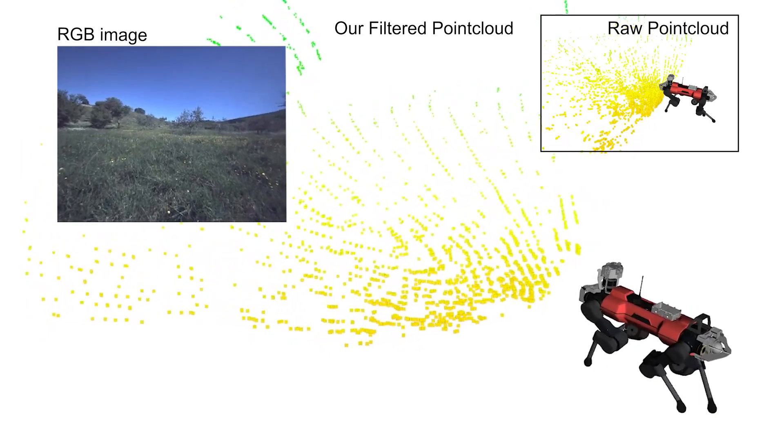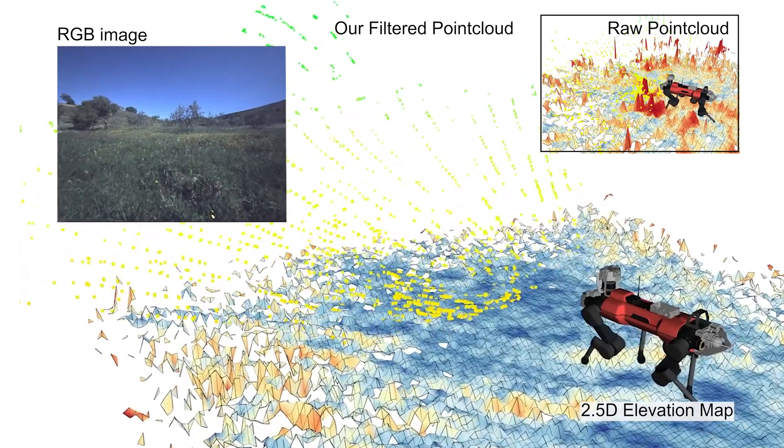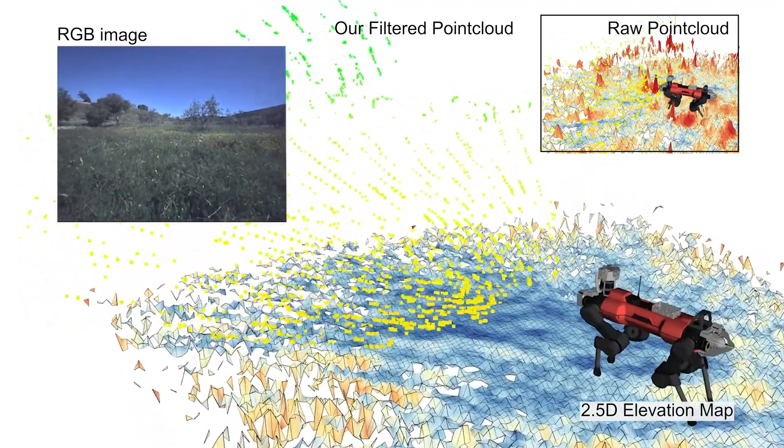To overcome this, we train a neural network that modifies the raw point cloud in a way that it aligns with the underlying support surface, using additional RGB images as an input.